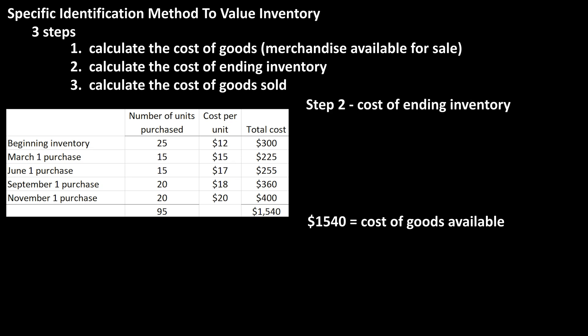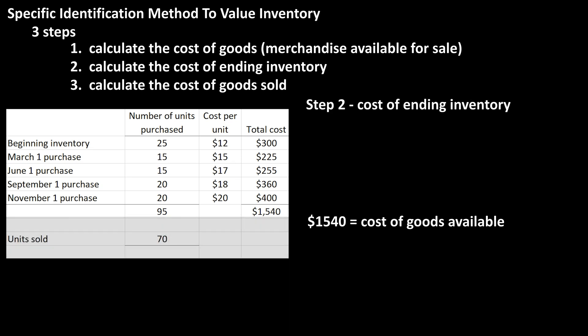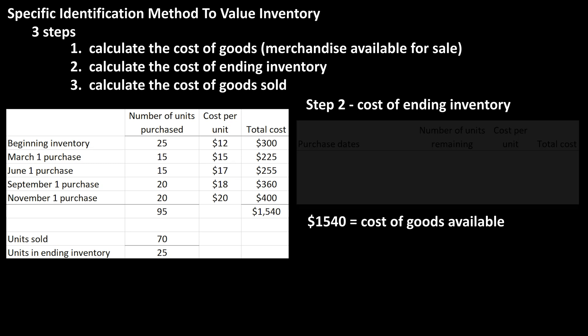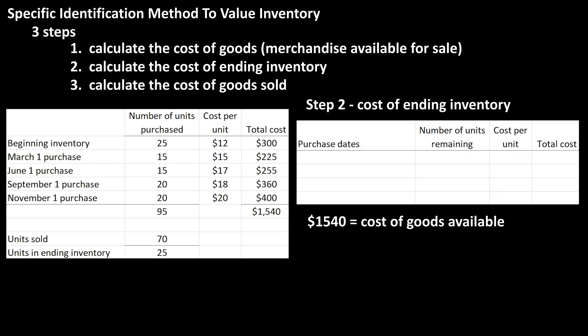Now for step two. During this time period, the business sold 70 units of the 95 units purchased. So 95 minus 70, or 25 units, are in the ending inventory. The business counts the number of color-coded units left in the ending inventory.